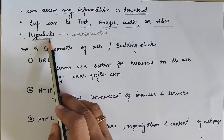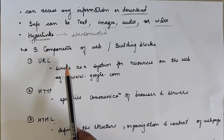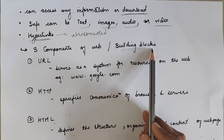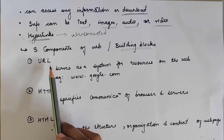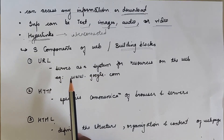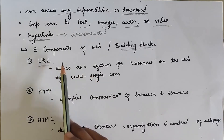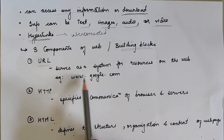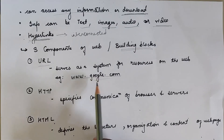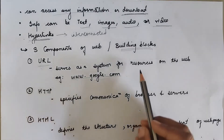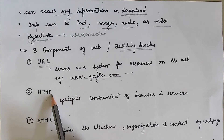— all are interconnected using a hyperlink, so we can find multiple pages. There are three main building blocks of WWW. The first one is the URL — Uniform Resource Locator — it serves as a system for resources on the web. Web pages are given an online address called a URL. For example, for Google, the URL is www.google.com.